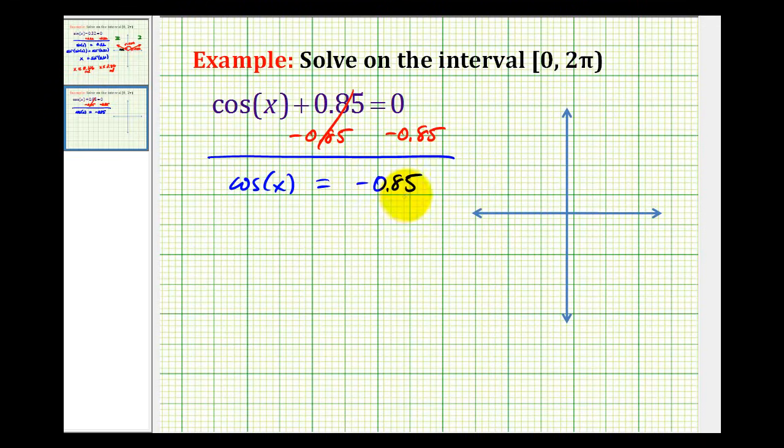Remember on the unit circle, cosine theta equals x and the x-coordinate is negative in the second and third quadrants, so the angles that are solutions to this equation must have terminal sides in the second and third quadrants. And that's important because we need to make sure that we determine all the solutions in this interval.